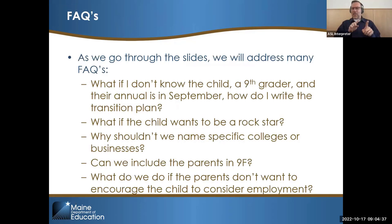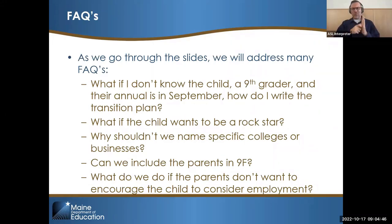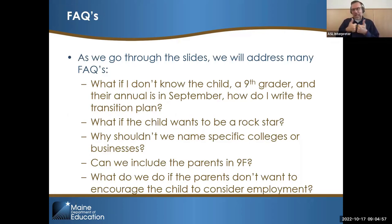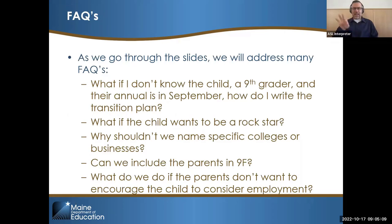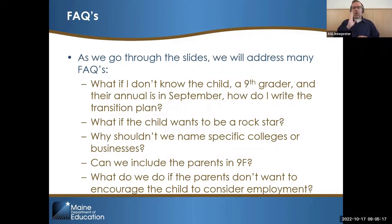These are some frequently asked questions that come up throughout the training and we do answer them as part of it. What if you don't know the child? They're a ninth grader and their annual is in September — how do you write a transition? What if the child wants to be a rock star, professional wrestler, or video gamer? Why shouldn't we name specific colleges or businesses? Can you include parents in 9F? And what to do if parents don't want to encourage the child to consider employment — that's a tricky one. We'll get to those as we go throughout the training.